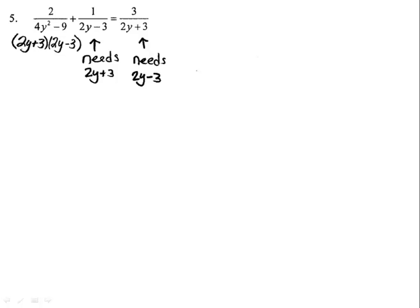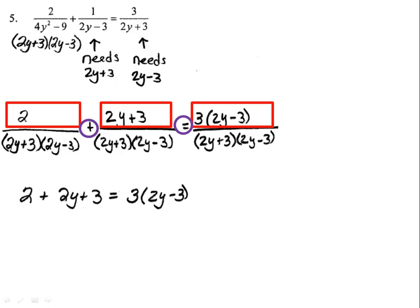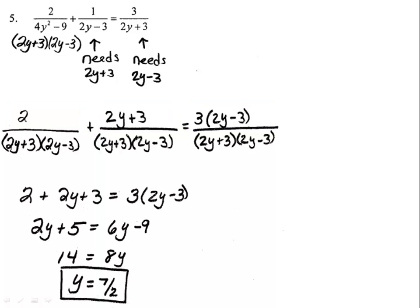Now that I know what each fraction needs, I can go ahead and find common denominators. Once I've written that, I go ahead, I utilize the numerators and the operators in between them, and I write my equation. 2 plus 2y plus 3 equals 3 times 2y minus 3. I go ahead and I solve the equation. I find out that y equals 7 over 2.